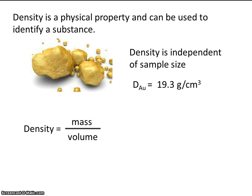Archimedes took the mass of the crown — they had balances and scales at that time. But he really didn't know how to get the volume of the crown. Volume was a known concept; you could measure length times width times height of a regular shaped object like a cube to get the volume. But the crown was an irregular object with a weird shape, and you couldn't easily measure its volume.